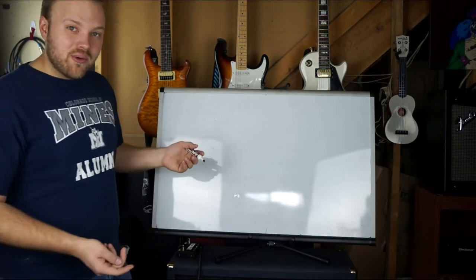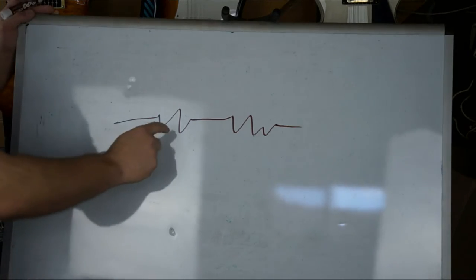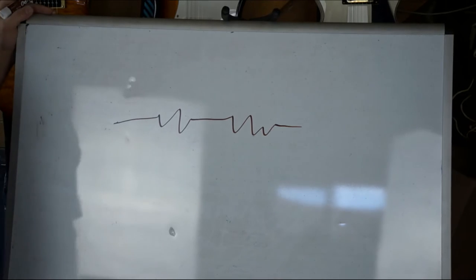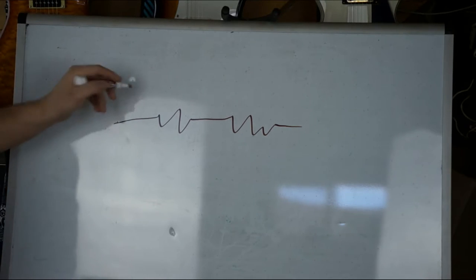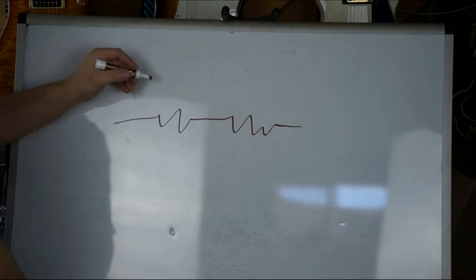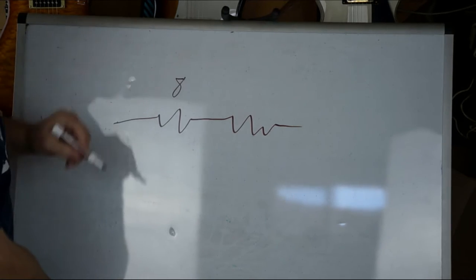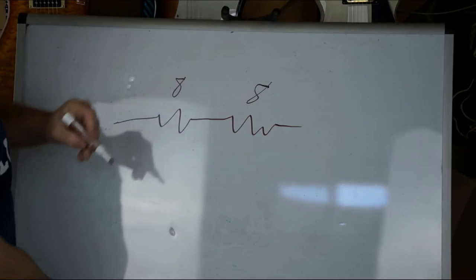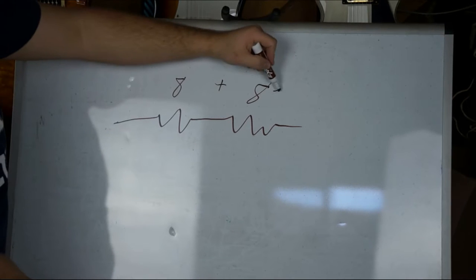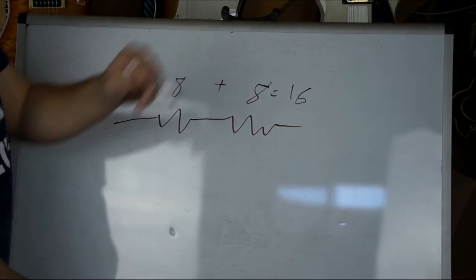So drawing that out with resistors would look something like this. In series, you've got one speaker right after the other, and to calculate that, you just add up the impedances. So if this is an eight ohm speaker, and this is an eight ohm speaker, eight plus eight equals 16, and that's your total impedance.